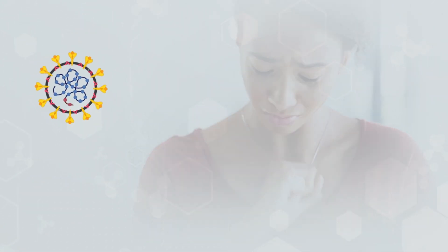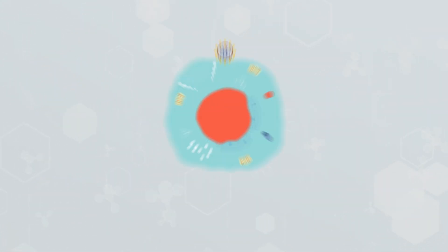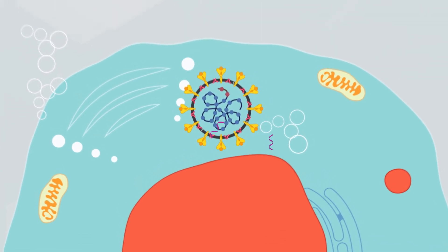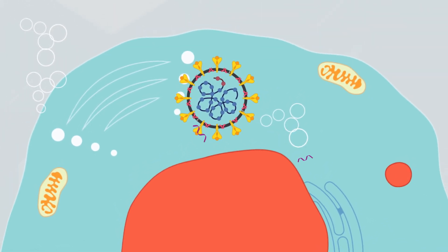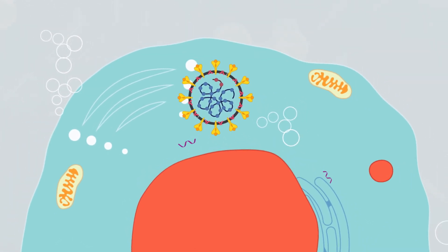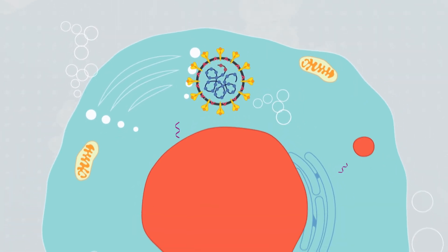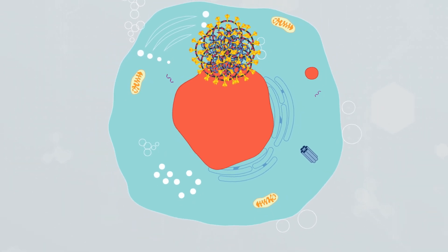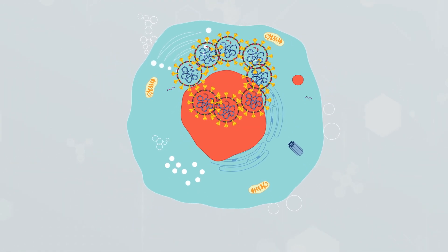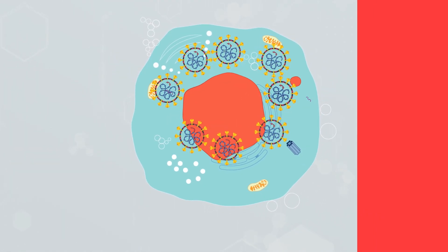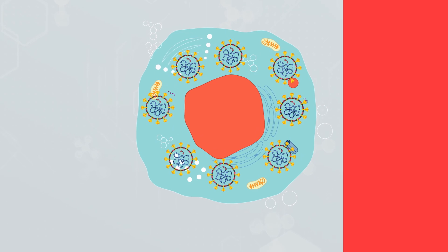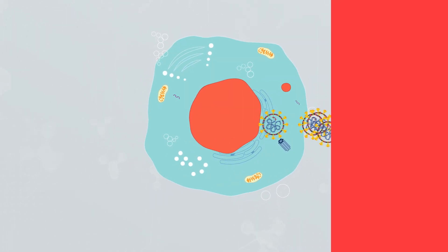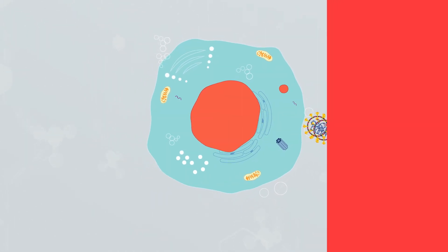Once attached, the virus enters the cells and releases its genetic material — the RNA — into the cytoplasm, making copies of itself. New copies of the entire virus are then formed and released into the bloodstream.